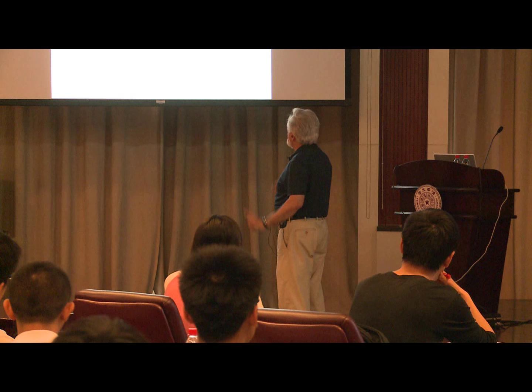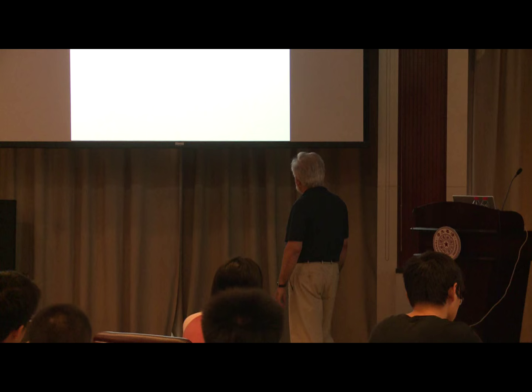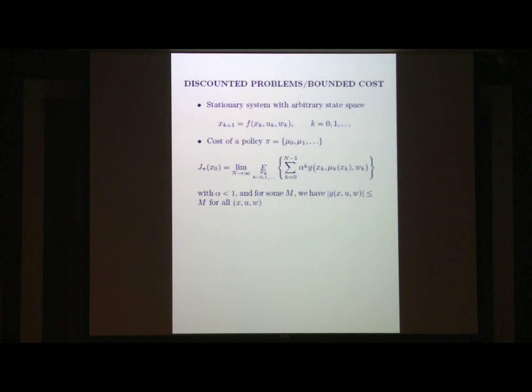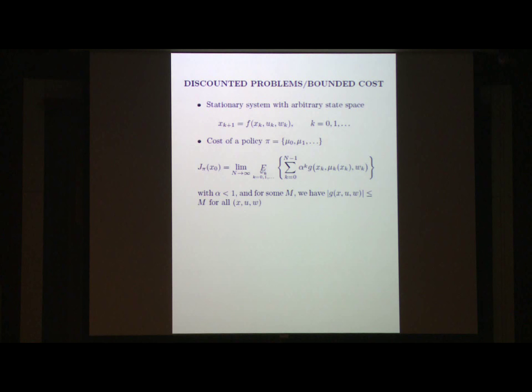One critical assumption for discounted problems, in addition to alpha less than 1, is that the cost per stage is bounded: there is a number m providing an upper bound to the absolute value of the cost for any x, u, and w. The mathematical effect is that it makes this series summable to a real number. Because g is bounded and alpha^k goes to zero geometrically, the whole series converges to a real number, so j_pi is a real-valued function.